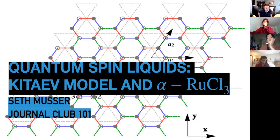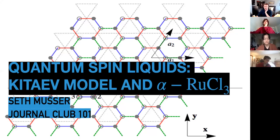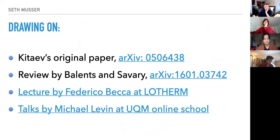I'm Seth Musser. Hopefully by the end of today you'll be tired of me talking and looking forward to Robert talking next week on deconfined quantum criticality. This week I'm going to be talking about more quantum spin liquids — specifically the Kitaev model and one of the candidate materials, alpha ruthenium trichloride.